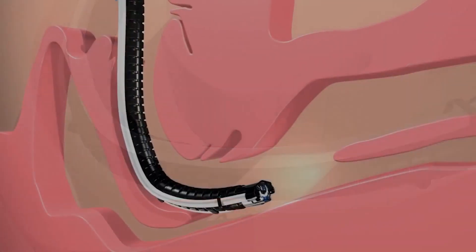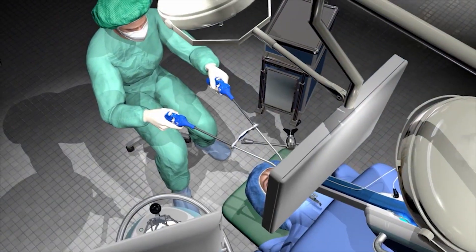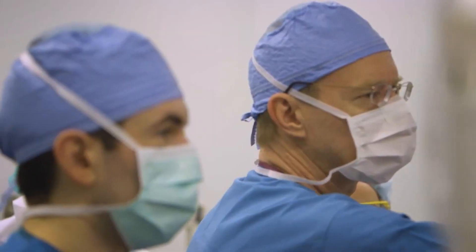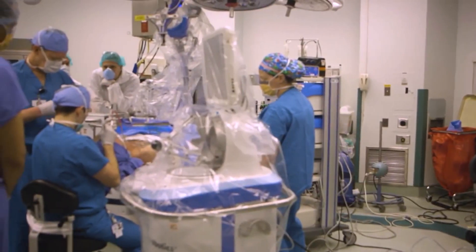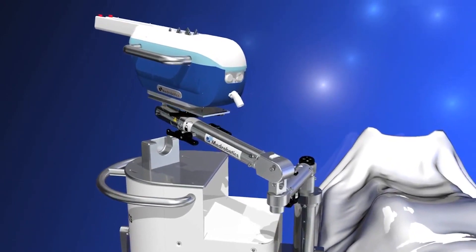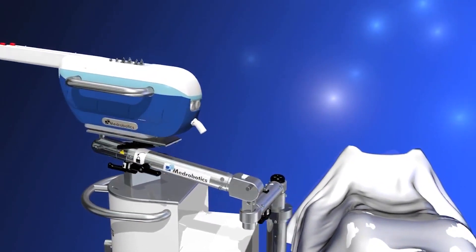Flex is ideal for exploring nonlinear or circuitous paths like the colon, a tricky and sometimes dangerous task using a traditional straight endoscope. Flex can enter through the mouth as well, allowing physicians to reach tough-to-access areas of the body such as the larynx and vocal cords.